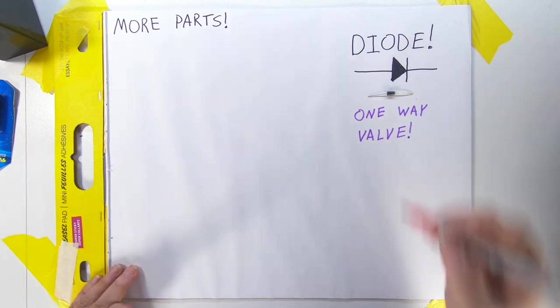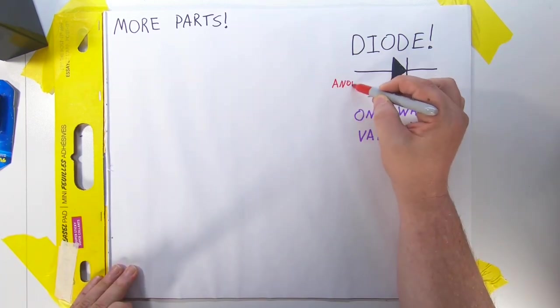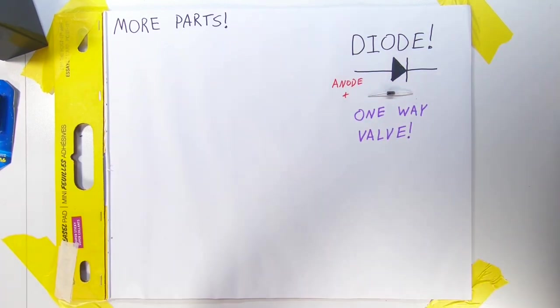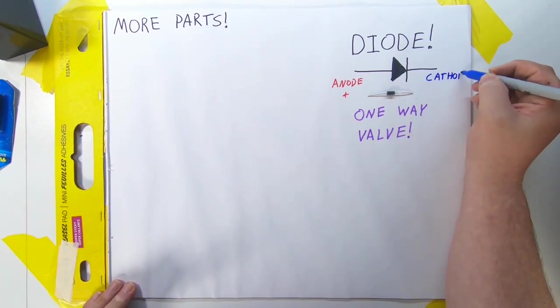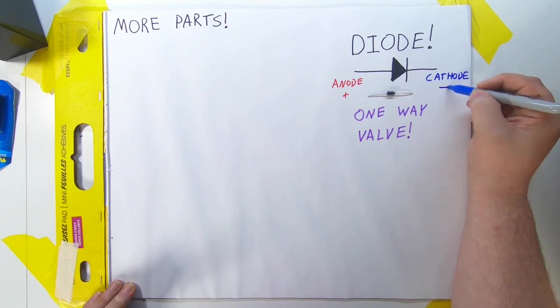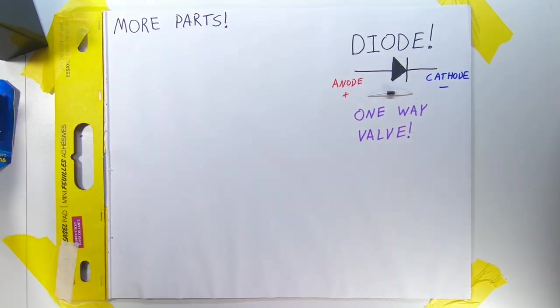Because they are one-way valves, diodes are polarized components. The positive side is called the anode, and the negative side is called the cathode. A diode will allow potential to flow from the anode to the cathode, the positive to the negative, but not the other way around.